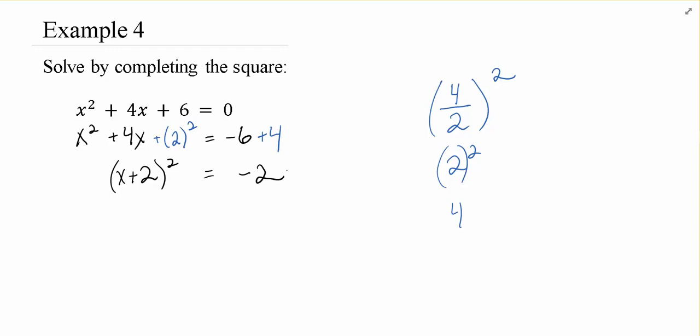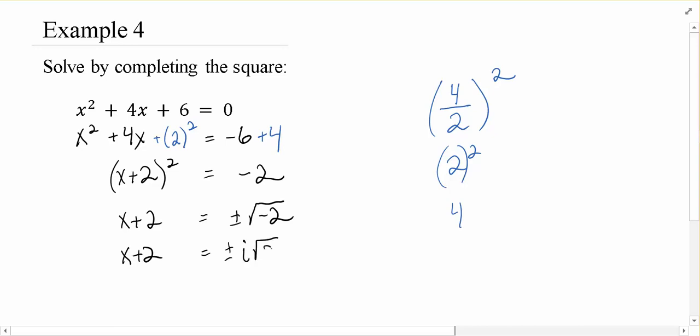Now we use the square root property by saying I can take the positive and negative square root of both sides, and I am taking the square root of a negative. So this gives me i root 2.